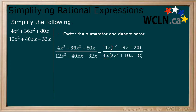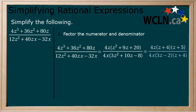If you are not sure how to factor trinomials and messy trinomials, I encourage you to review both as we will not be going through how to factor these. Our trinomial in the numerator factors to z plus 4 multiplying z plus 5. Our messy trinomial in the denominator factors to 3z minus 2 multiplying z plus 4.